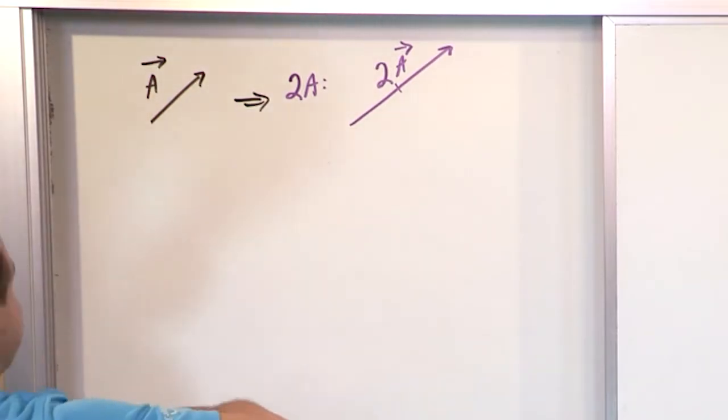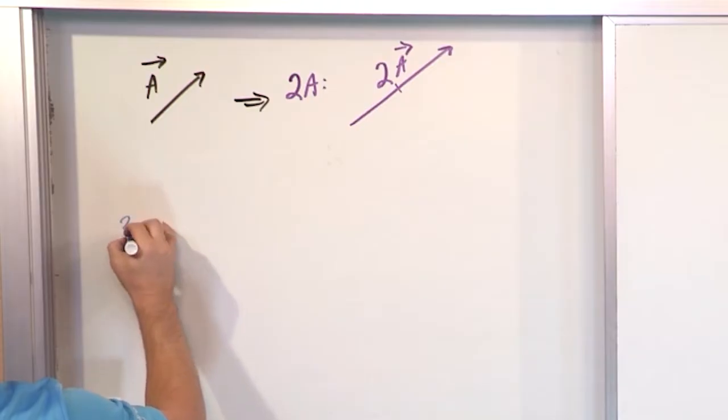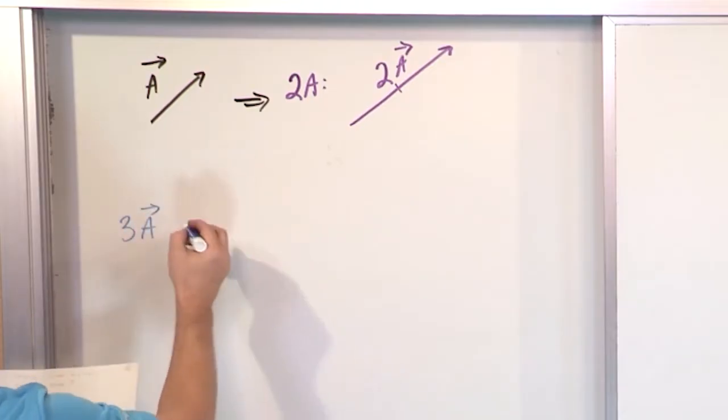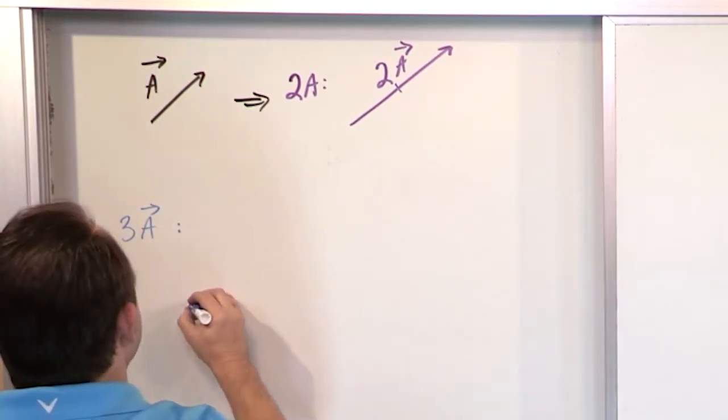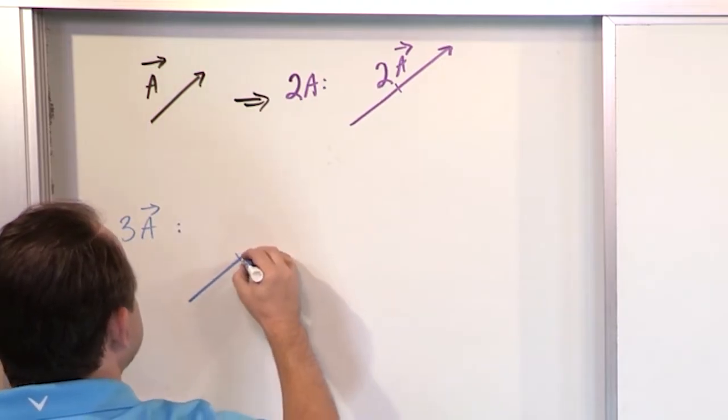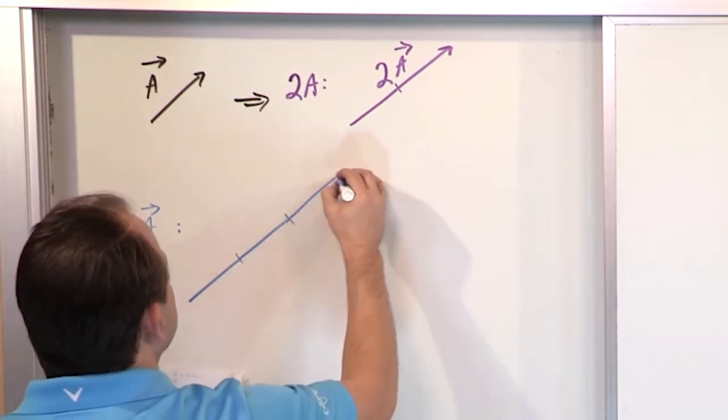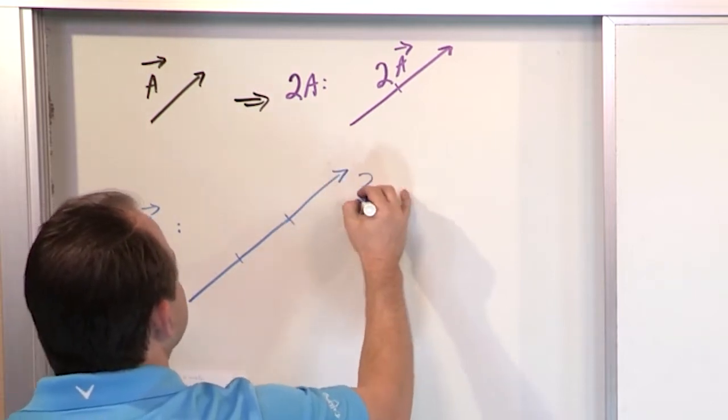So if this is vector a and that's two times a, what do you think vector three times a would be? Well, same thing. I'm going to have one length of that vector here to help me judge it. That's another length of that vector there, put a little mark to help me judge it. That's the third length of that vector here. I'll call this three times vector a.